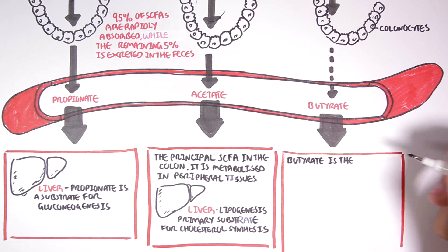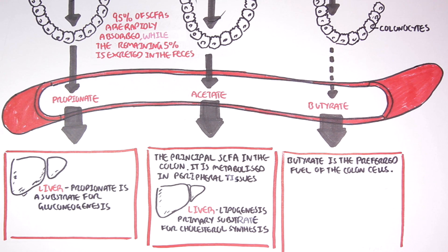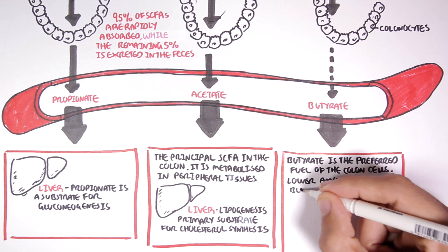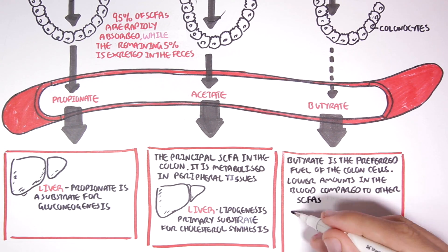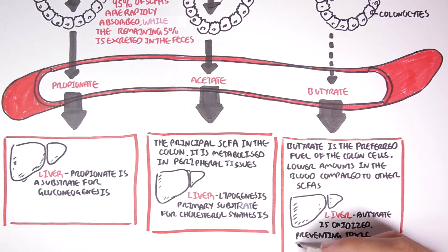Butyrate is the preferred fuel for colon cells. About 75% of energy for colon cells comes from butyrate. And because of this, there are lower amounts of butyrate in the blood, compared to the other short-chain fatty acids. In the liver, butyrate is oxidized, preventing toxic systemic concentrations.